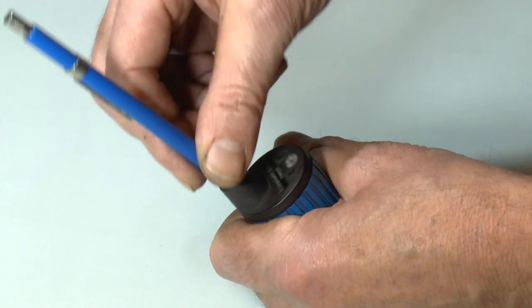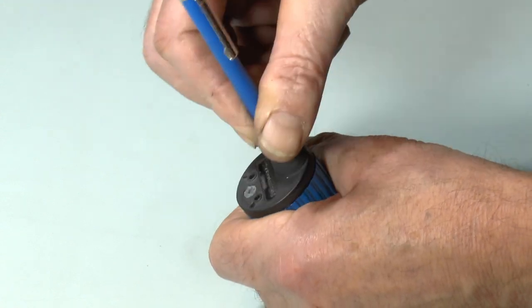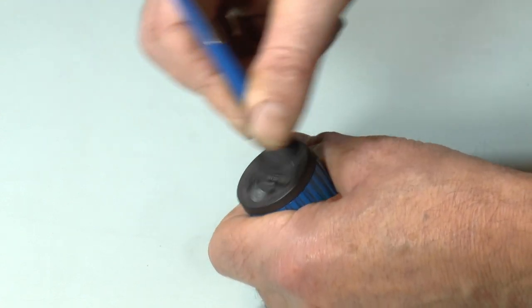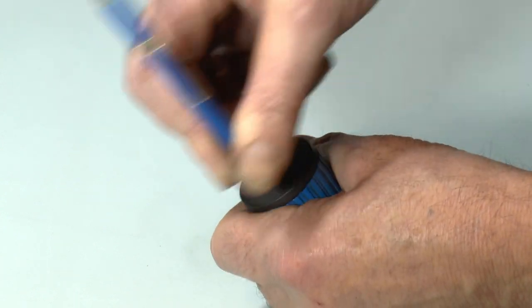There are brands of clutch pencil that won't fit this lead pointer, but I use it for both Staedtler and Faber-Castell. As long as the barrel of your pencil isn't thicker than the Staedtler, it should be okay.